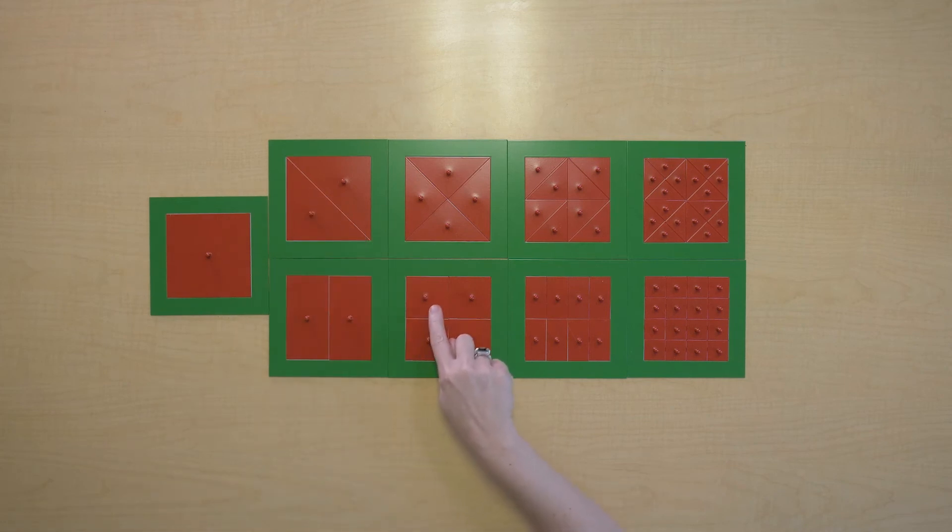Now here I have one, two, three, four congruent shapes that make up the whole. And here I have one, two, three, four congruent shapes that make up the whole.